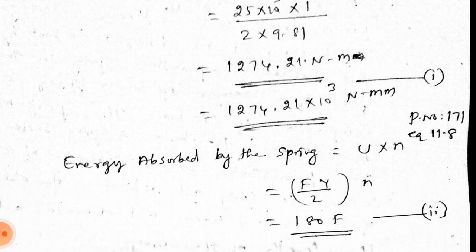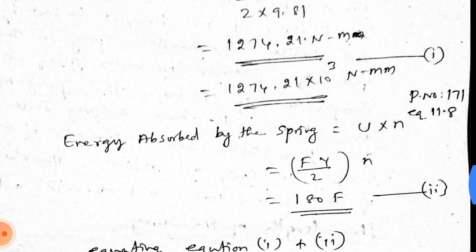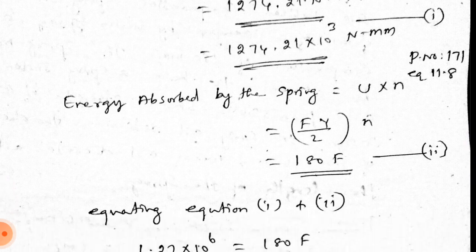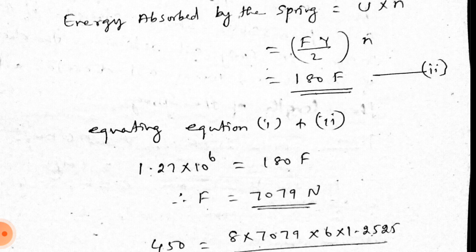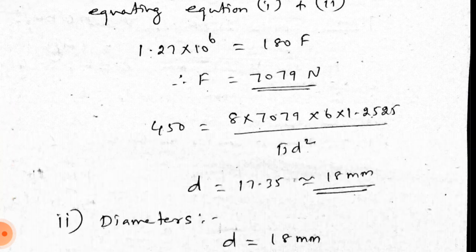The energy absorbed by the spring equals F × y / 2 × n, from page 171, equation 11.8. With y = 180 mm and n = 2, equating kinetic energy to energy absorbed: 1.27 × 10⁶ = 180 × F. Therefore, F = 7079 N. Now substituting F back into equation 11.1d to find the wire diameter d = 18 mm.